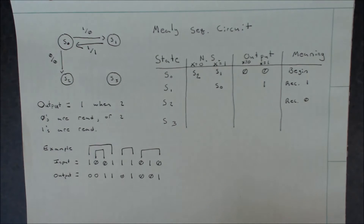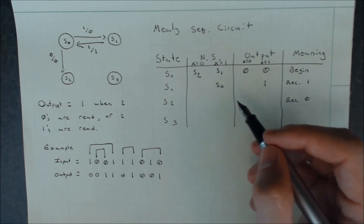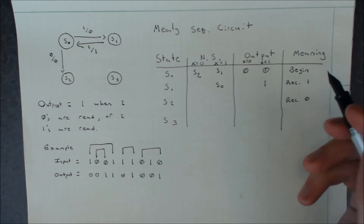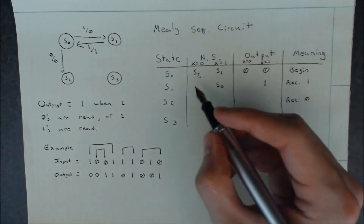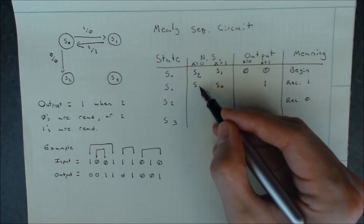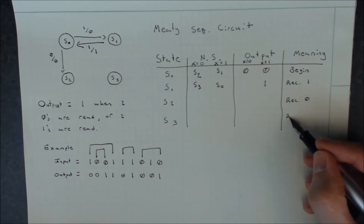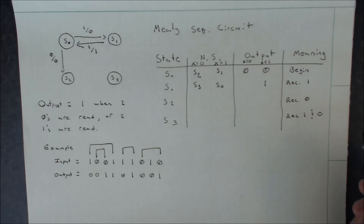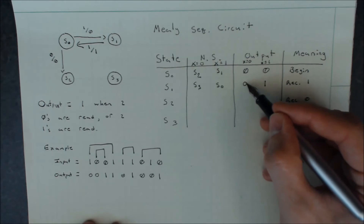Moving on, if we get a zero in S1, this is where we have to define our S3. If we received a one and then received a zero, we haven't received any pairs yet, but we can't go to any of the other states. So we define a new state S3, meaning received one and zero. Because we haven't received two of any single digit, our output will still be zero.